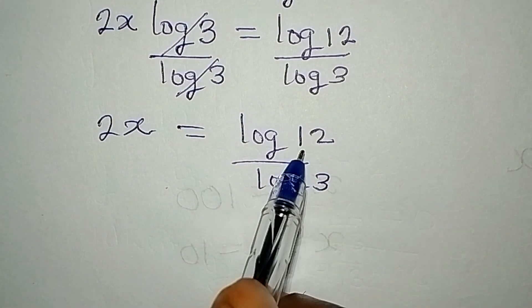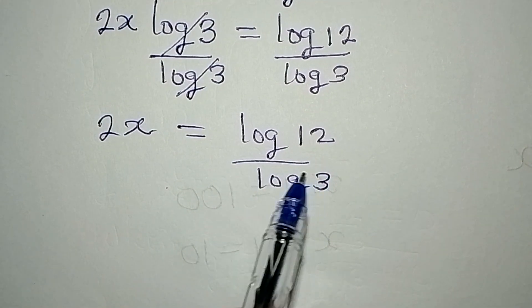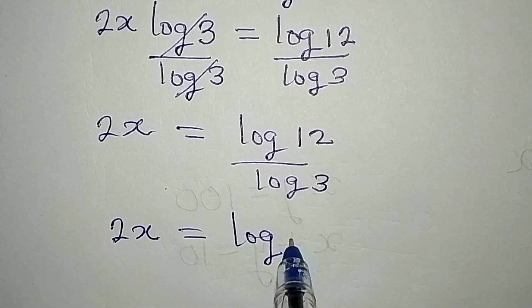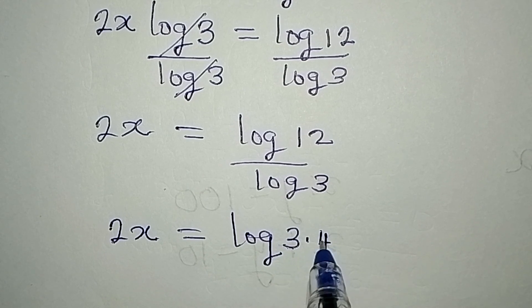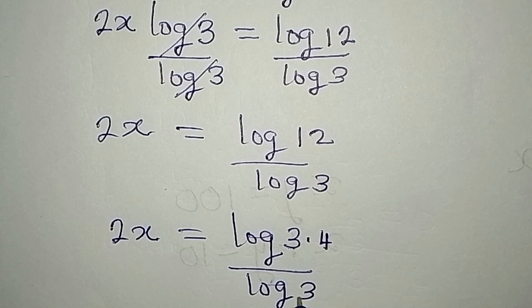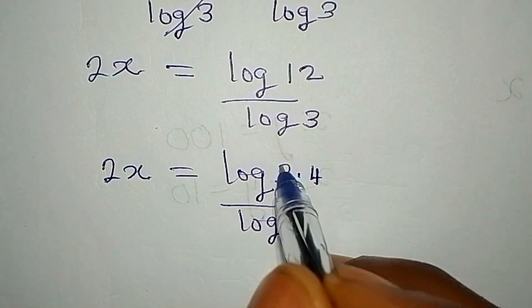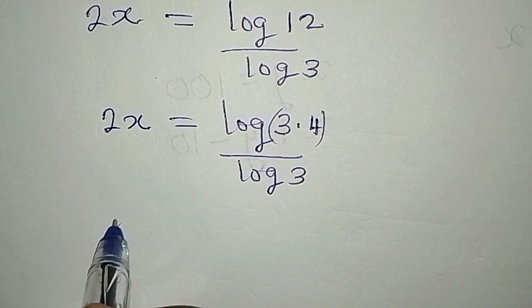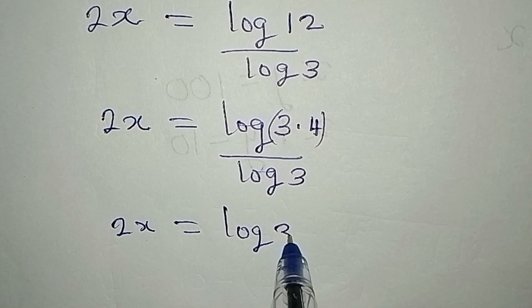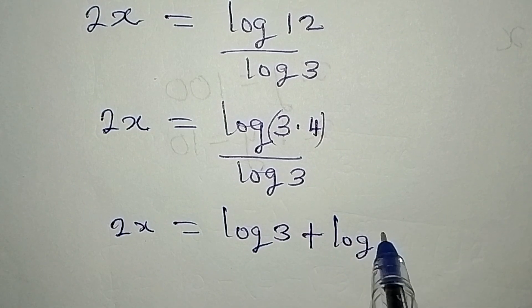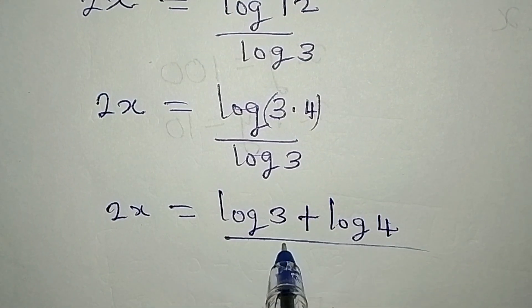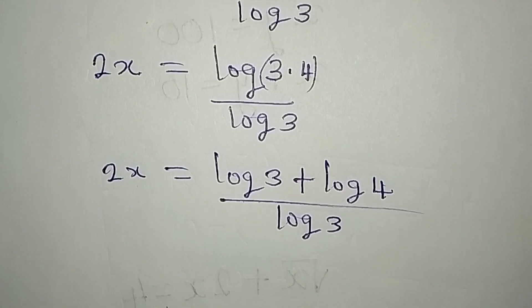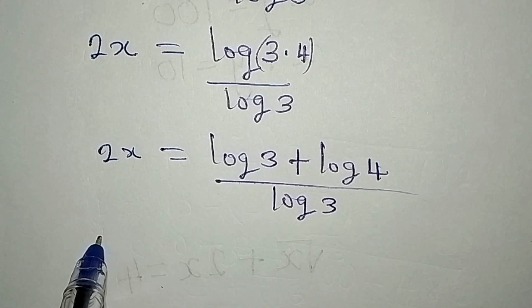Mind you, we can simplify this — do not divide this and get log 4, that would be wrong. So 2x is equal to log of 3 multiplied by 4, over log 3. If you multiply like this it means you are having log 3 plus log 4. So we are having 2x that is equal to log 3 plus log 4. And log 3 plus log 4 is equal to log 12.